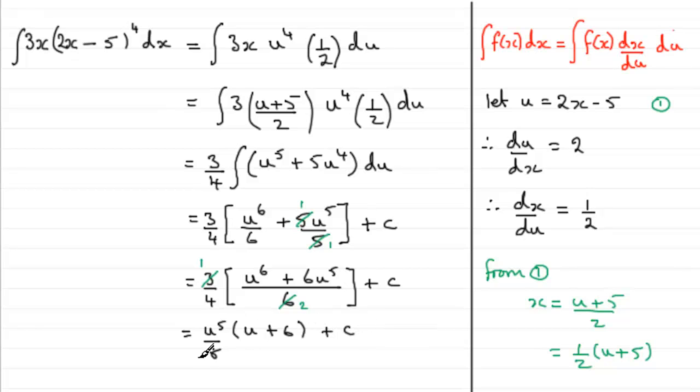Now we can make the substitution back, we can substitute for u back in as 2x minus 5. And what we've got now is 1 eighth of u to the power 5, so that's going to be 2x minus 5, all to the power 5. And then we've got u plus 6.